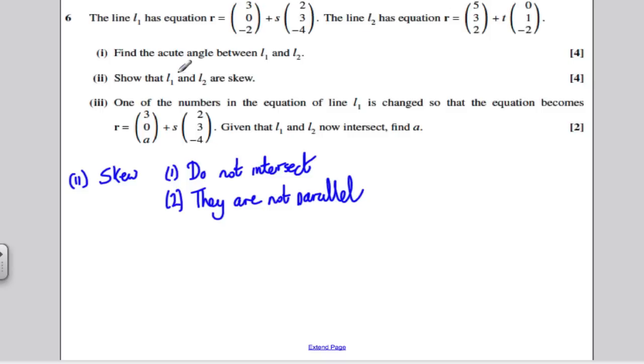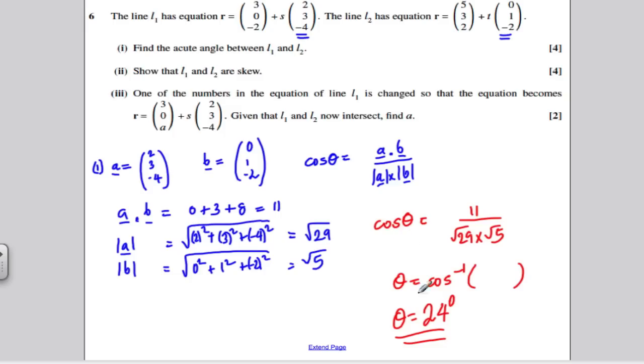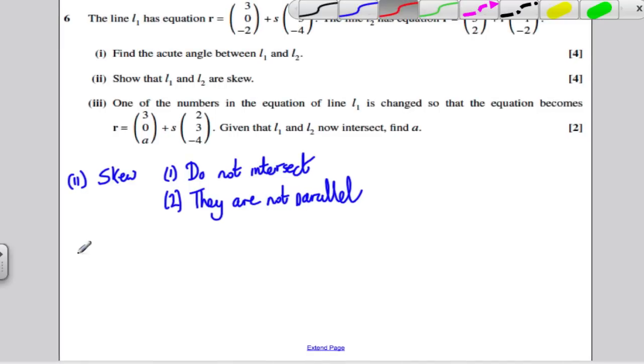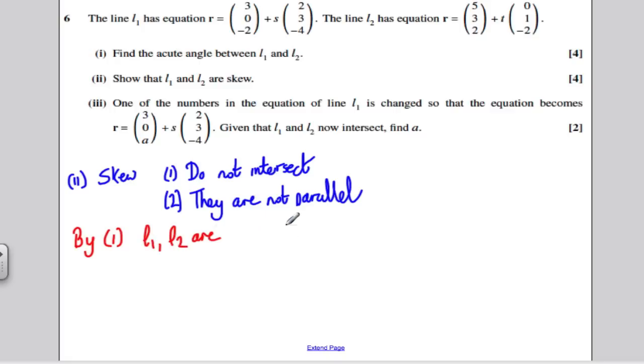Now, given that there was an angle between L1 and L2 of 24 degrees, we can say clearly that by part 1, L1 and L2 are not parallel. Because they have an angle of 24 degrees between them. So they can't be parallel. Lastly, we have to show they do not intersect, which is the harder thing to show about two things being skew.